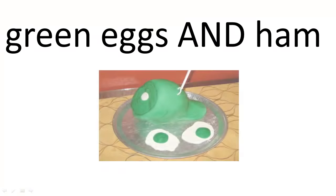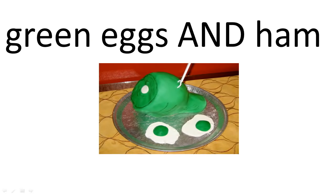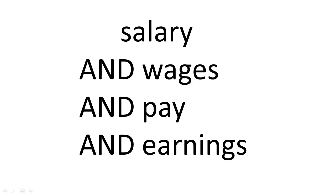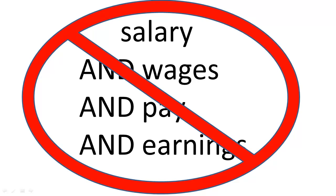Green eggs AND ham is going to pull up, you guessed it, just green eggs and ham. It won't find just green eggs or just ham — both have to be present. AND is good to put between terms that mean different things, like gender AND salary AND expectations. Put AND between terms that mean the same thing, and you'll likely end up with zero results, because how many authors are going to use that many different terms that essentially mean the same thing?